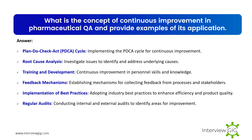What is the concept of continuous improvement in pharmaceutical QA? Examples of its application include: implementing the Plan-Do-Check-Act (PDCA) cycle for continuous improvement; root cause analysis to investigate issues and identify underlying causes; training and development for continuous improvement in personnel skills and knowledge; establishing feedback mechanisms for collecting feedback from processes and stakeholders; adopting industry best practices to enhance efficiency and product quality; and conducting regular internal and external audits to identify areas for improvement.